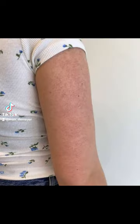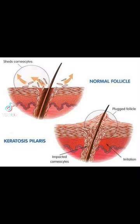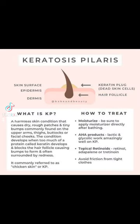Keratosis pilaris is a condition that causes rough patches and tiny acne-like bumps on your skin. KP is often the result of skin that produces too much keratin. Keratin is a protein, and the overproduction of it leads to blocked hair follicles, causing these tiny red bumps.